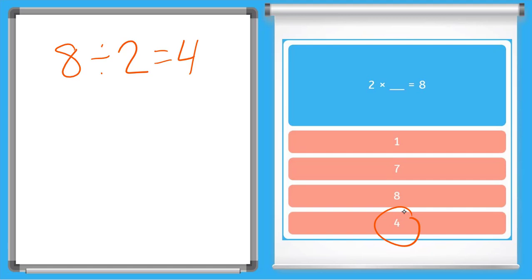So 4 is our answer. And we could plug that in and check it if we want. 2 times 4, you know your facts, equal 8. And that is correct. Let's try another one.